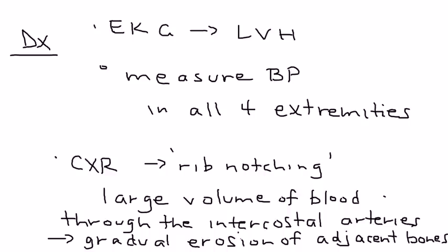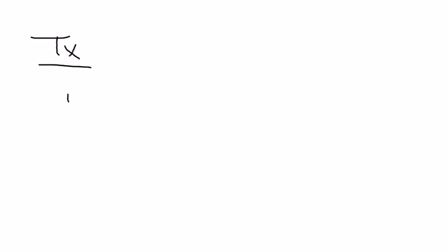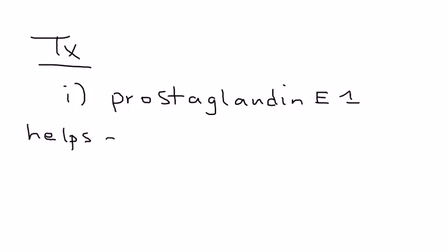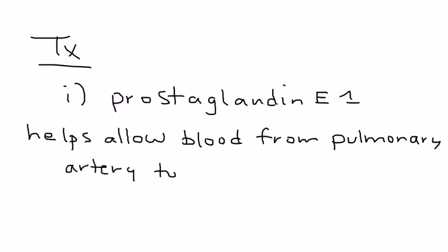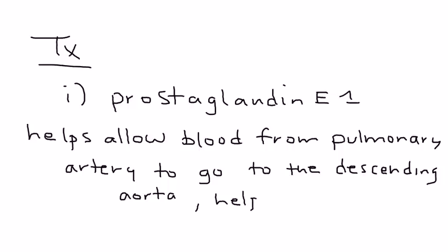What is the treatment? The first thing that they give is something known as prostaglandin, and prostaglandin E1 in particular. The reason this is given is because prostaglandin E1 helps to allow blood to go to the lower extremities. When you give prostaglandin it opens up that ductus arteriosus which helps allow blood from the pulmonary artery to go to the descending aorta, and this essentially is important because it helps to improve the systemic perfusion.